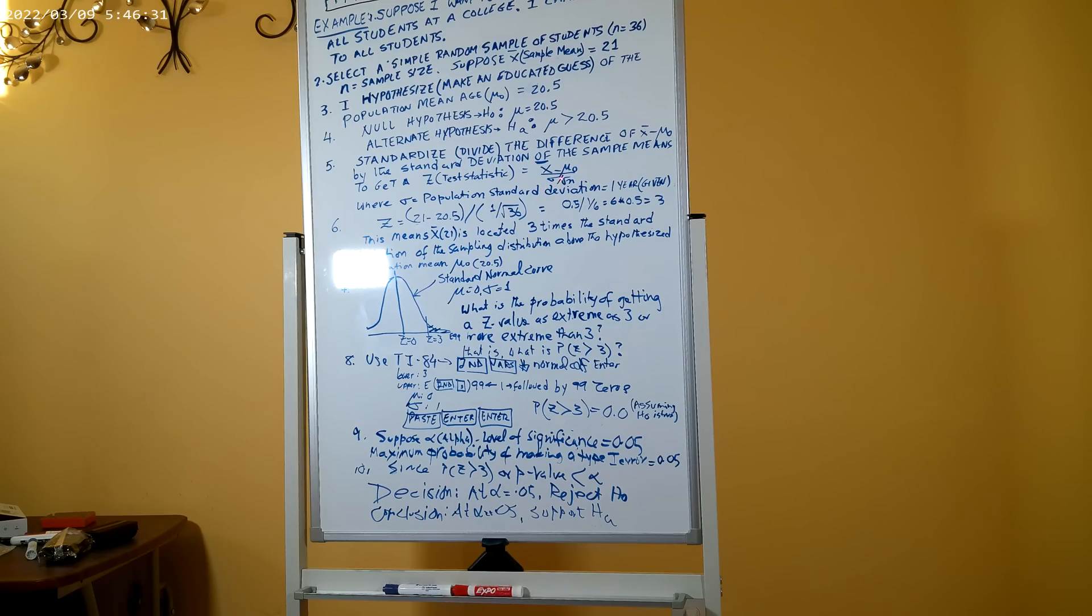I want to mention that the standard deviation of the sample means, which is sigma divided by square root of n, is also called the standard error of the mean. Suppose sigma, the population standard deviation, is given as one year. So I calculate the test statistic, which is a characteristic of the sample.